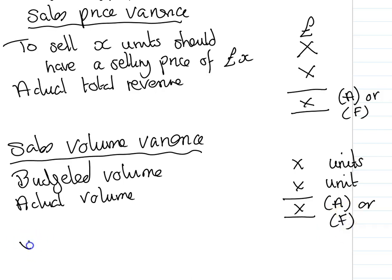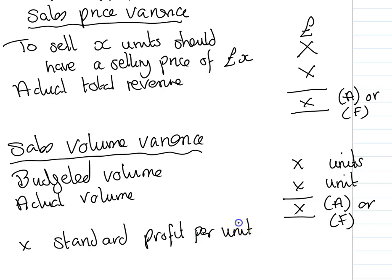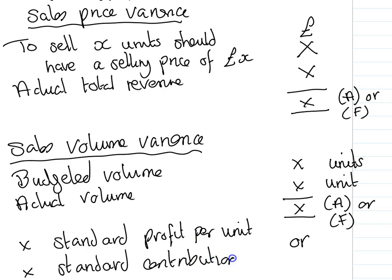To change this into a financial measure, we then multiply by the standard profit. Remember, by the term 'standard' we also mean 'expected' — what we expect our profit per unit to be. Or, if we're operating in a marginal costing system, we would multiply it by our standard contribution per unit. That will give us a financial measure which again would be adverse or favorable.